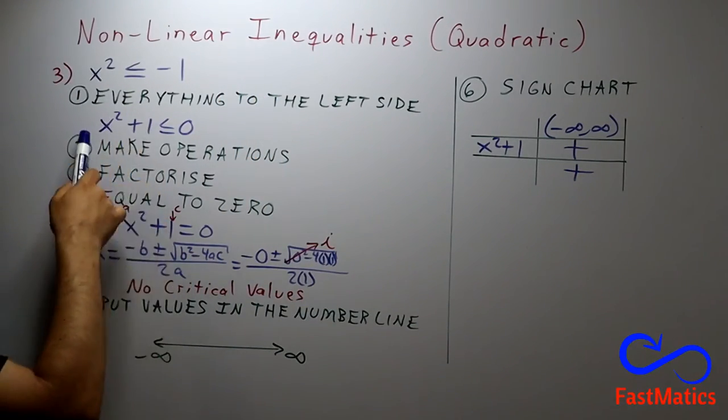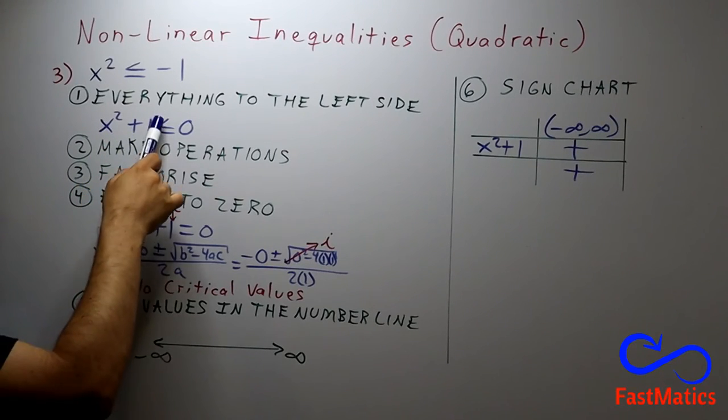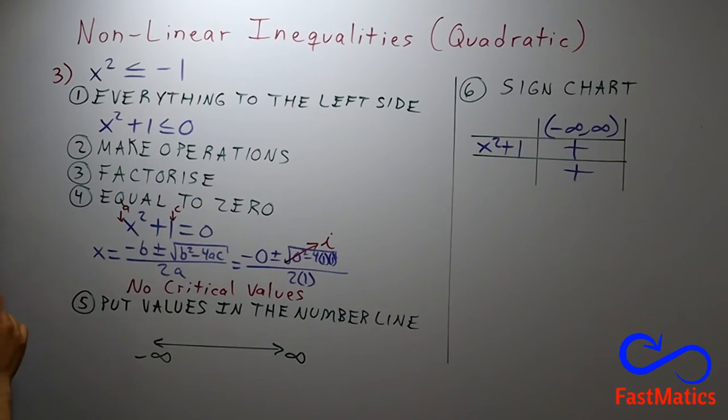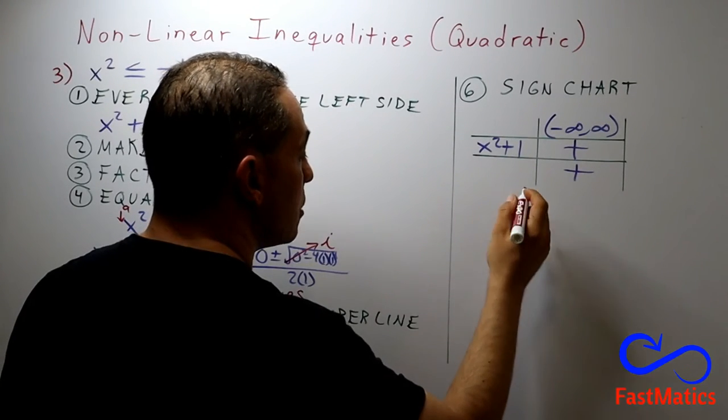But, here, we see that we need one expression less than or equal to 0. Less than 0 is a negative sign. And here, we have a positive sign. So, this inequality has no solution.